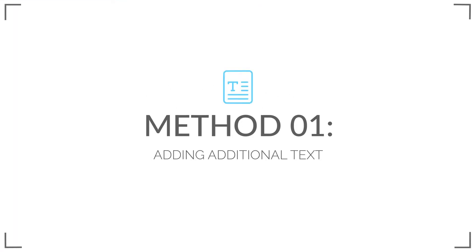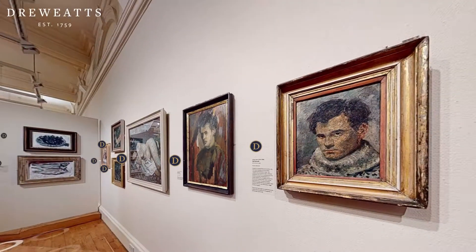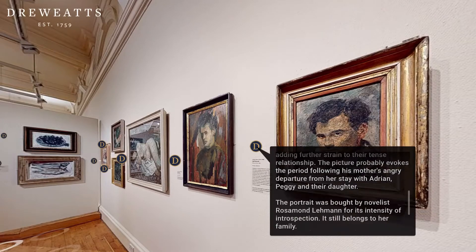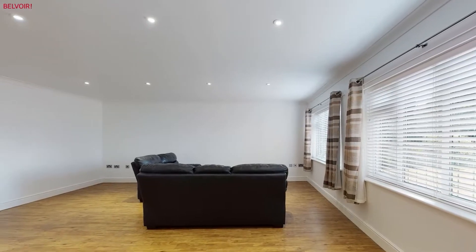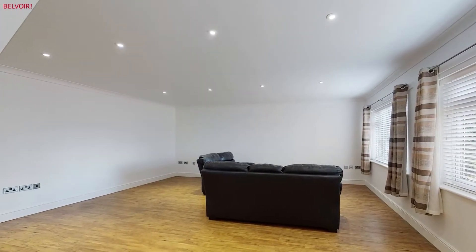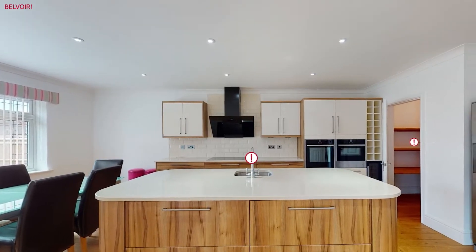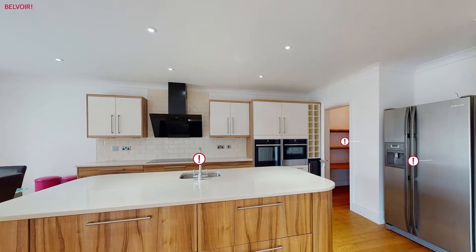Method one: adding additional text. Adding additional text to different data points within your virtual tour allows you to convey important information to potential customers. When selling a home, for example, there are a lot of USPs that a property virtual tour can capture, but by using additional text within data points you can quickly communicate other information that may not have been immediately obvious from the tour.